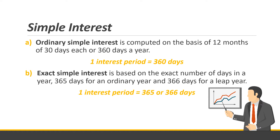There are two types of simple interest. First is ordinary simple interest, computed on the basis of 12 months of 30 days each, giving 360 days a year — so each month is fixed at 30 days regardless of the actual calendar. Second is exact simple interest, based on the exact number of days in a year: 365 days for an ordinary year and 366 days for a leap year, accounting for actual month lengths like January having 31 days and February having 28 days.